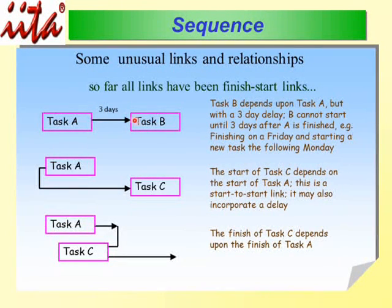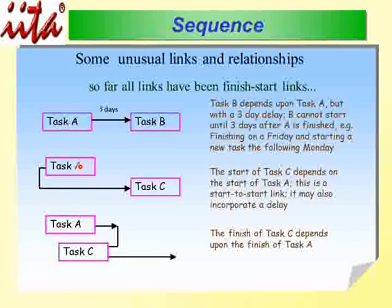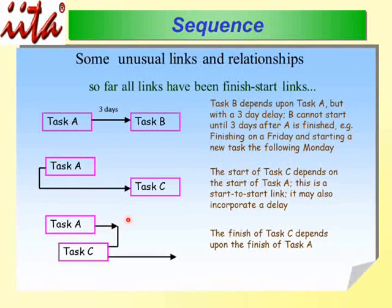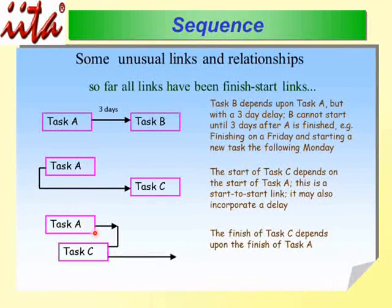There is also what is called Start-to-Start, where task C can only start when task A has started — there may also be a delay. There is also Finish-to-Finish, where task A will have to finish before task C can finish; task C just keeps going until it receives the signal that task A has finished. These are the other relationships we have, apart from Finish-to-Start.